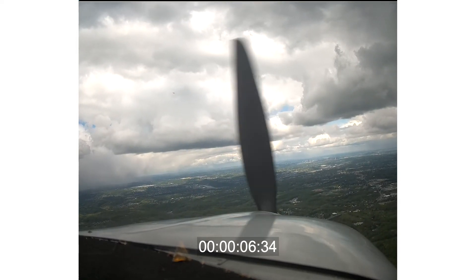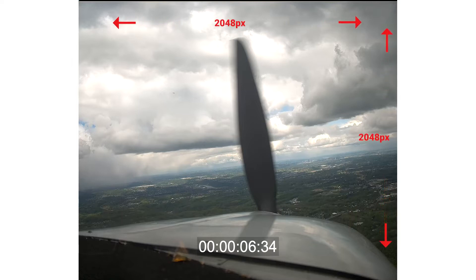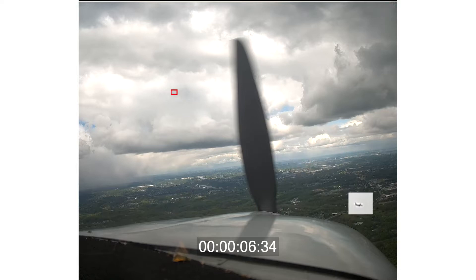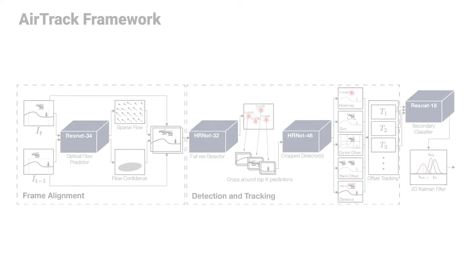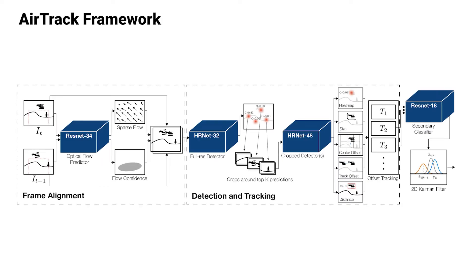For example, here is an image taken from a general aviation aircraft with an image resolution of 2048 by 2048. The intruder can barely be seen and can be especially hard to detect from a moving aircraft. In this work, we present AirTrack, an onboard deep learning framework for long-range aircraft detection and tracking.